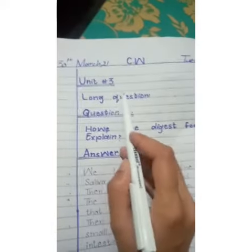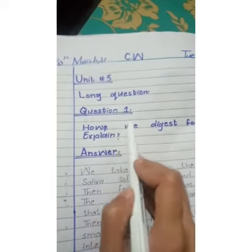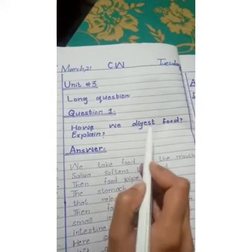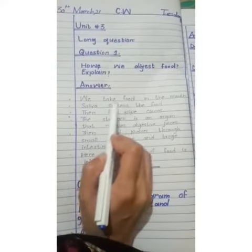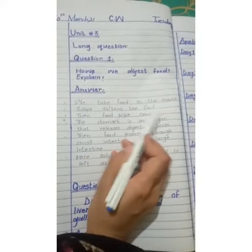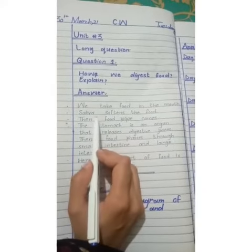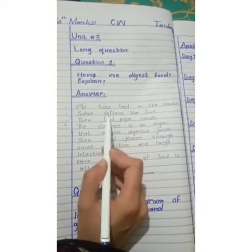Class work, Tuesday, Unit 3, long questions. Question number one: how do we digest food? The answer is: we take food in the mouth. Our mouth ke zariye se food ko eat kertay hain. Saliva softens the food — saliva food ko soft karta hai.